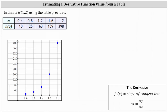We're asked to estimate h prime of 1.2 using the table below. So h prime of 1.2 is equal to the slope of the tangent line passing through the point where x equals 1.2, which would be the slope of the tangent line passing through this point here.